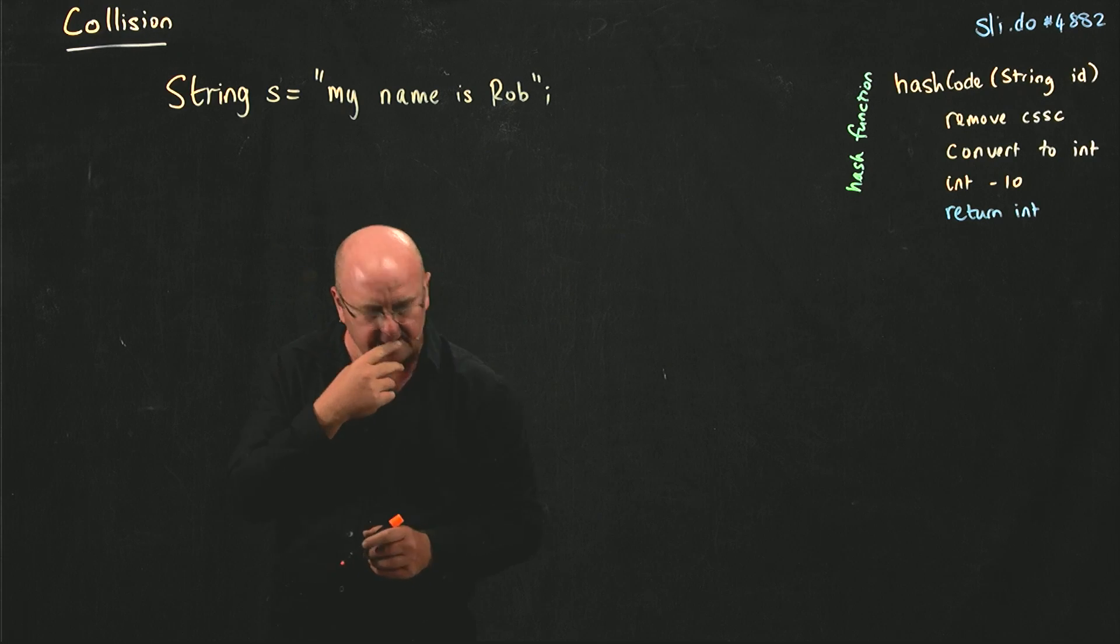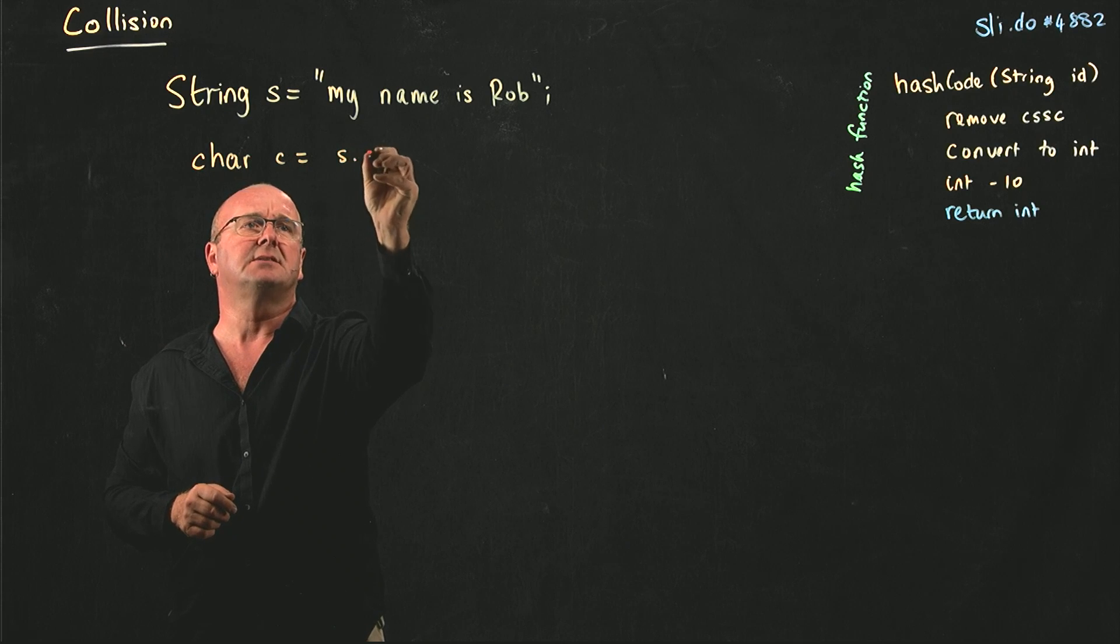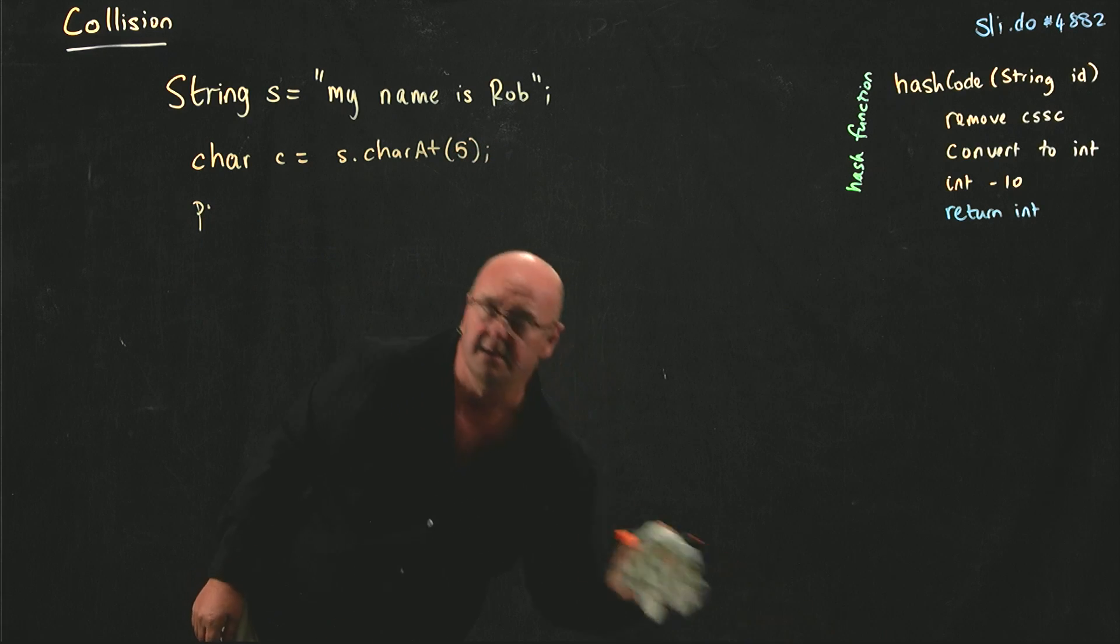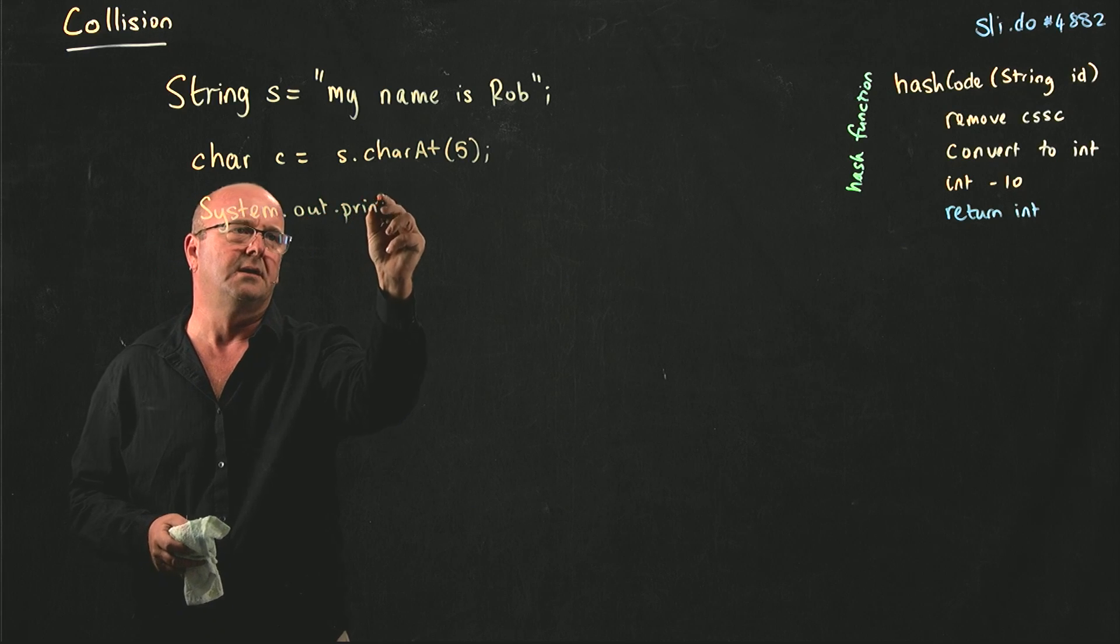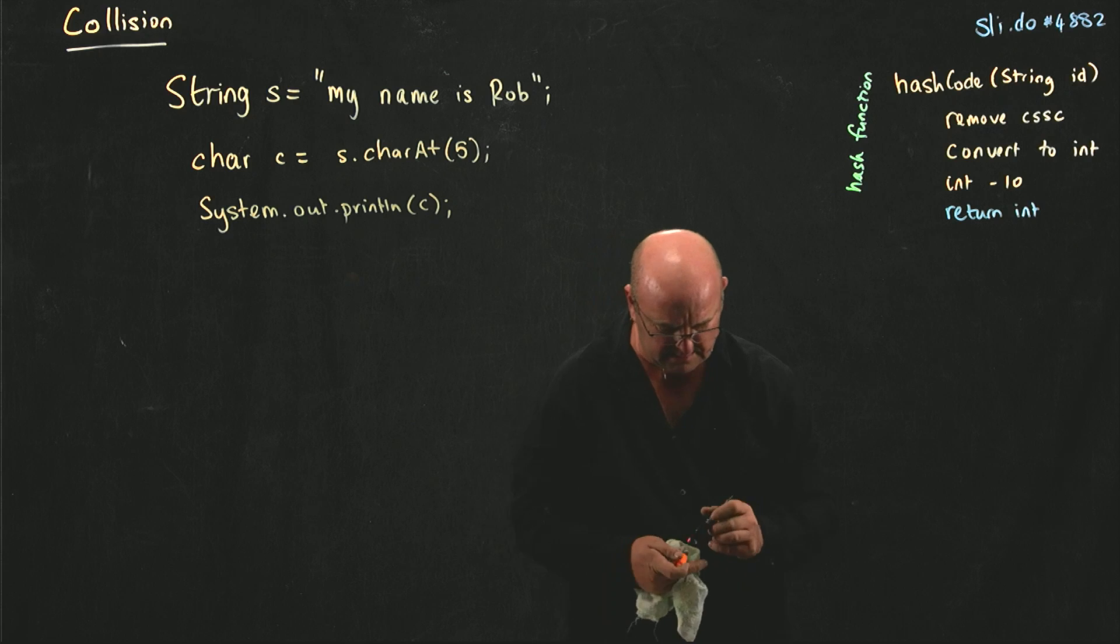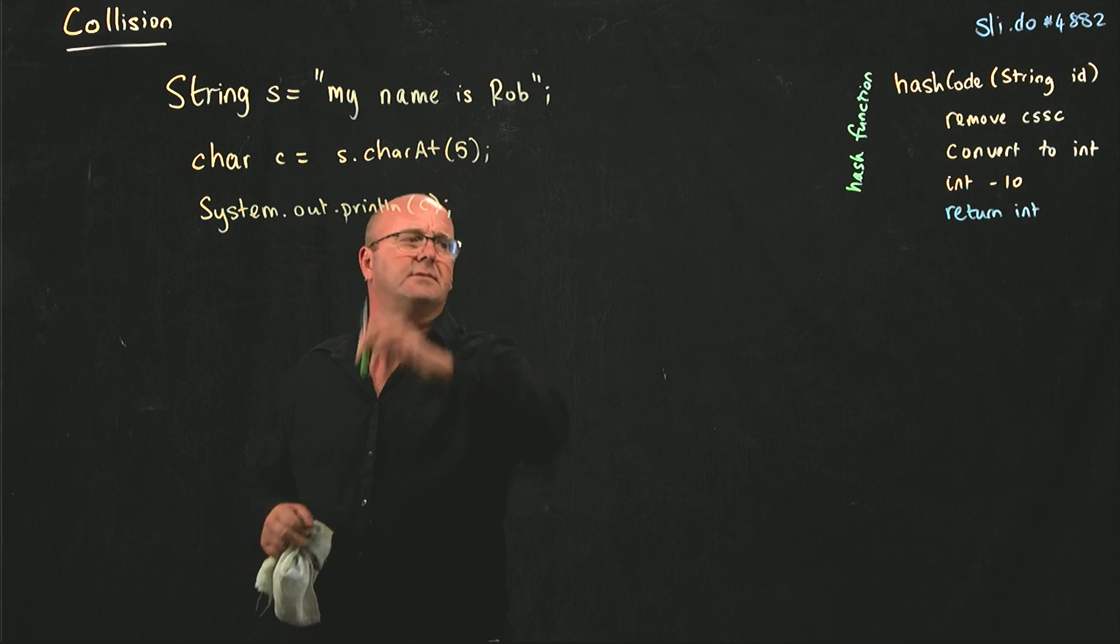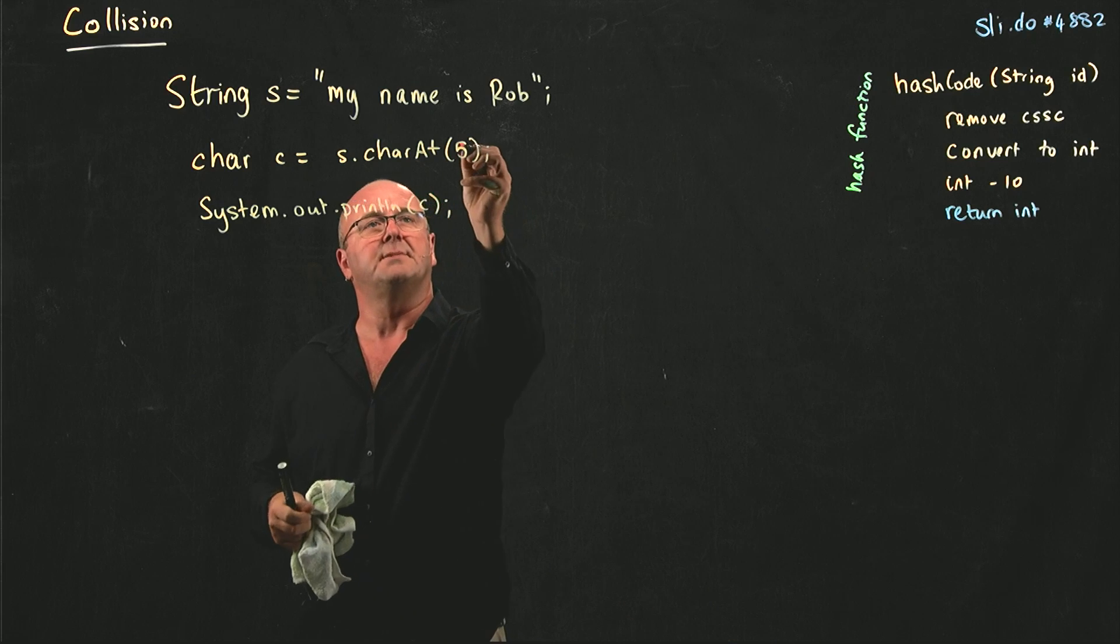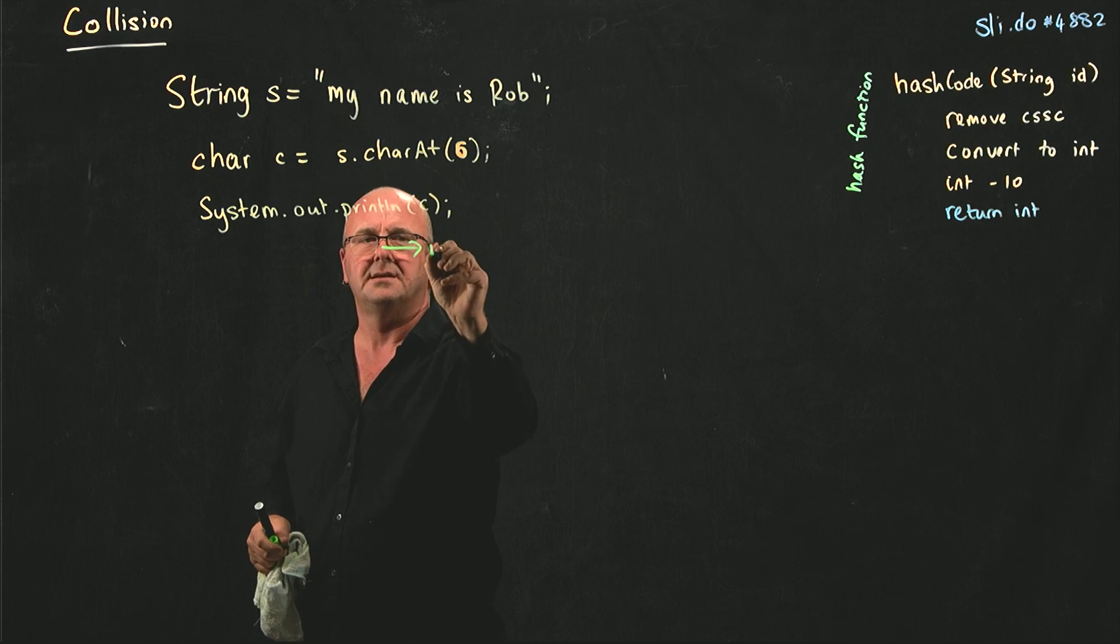What happens if I run this code? I'm going to get a char c = s.charAt(5), and I'm just going to print that character. What's that going to print out? Let's make it a more complex question - position six. I'm going to print out the 'm', right?